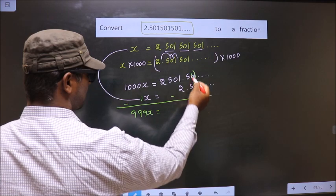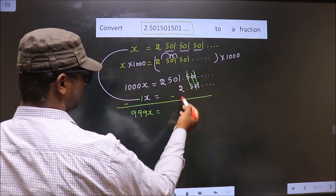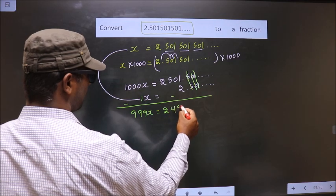Here all this cancels out. So 2501 minus 2 will result in 2499.